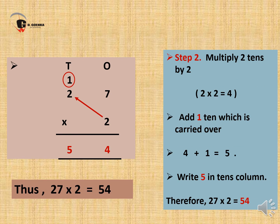After completing step 1, let us move on to step 2. Here we multiply 2 tens by 2. So 2 multiplied by 2 is equal to 4. But we also have to add 1 ten which is carried over during the first step. So 4 plus 1 is equal to 5. Now write 5 in the tens column. Therefore, 27 multiplied by 2 is equal to 54. When we multiply 27 by 2, the product is 54. And in multiplication, the answer is always known as product.